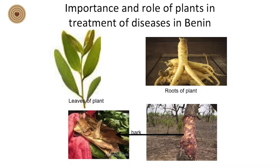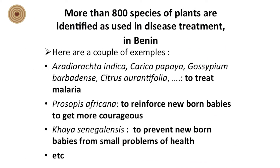Benin people also use various parts of trees — leaves, bark, and roots — in the form of powder or natural preparations to prevent or treat disease. 840 species of plants have been identified as being used in disease treatment in Benin.